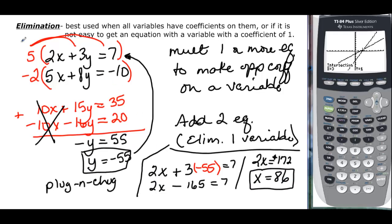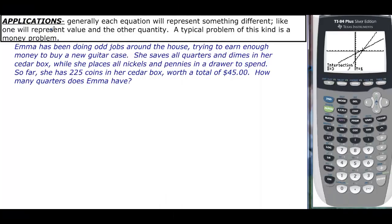An application: generally each equation will represent something different. Often you're going to be talking about value and quantity. This is a typical money problem: Emma's been doing odd jobs around the house trying to earn money to buy a new guitar case. She saves all her quarters and dimes in her cedar box while she places all nickels and pennies in a drawer to spend. So far, she has 225 coins in her cedar box worth $45.